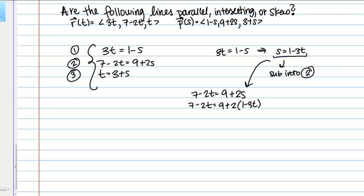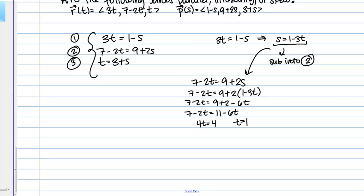Now I'm just going to go through and solve this for t. 7 - 2t = 9 + 2 - 6t. That's 7 - 2t = 11 - 6t. If I rearrange everything I should end up with 4t = 4, which gives me t = 1. I'm just going to underline that. We want to keep track of that value there.